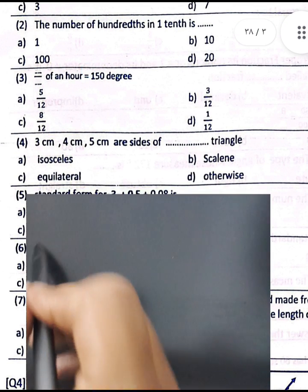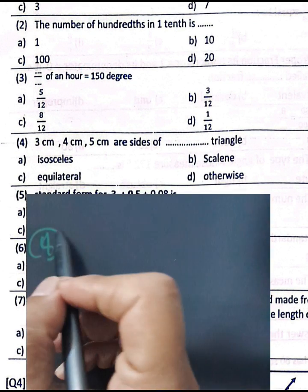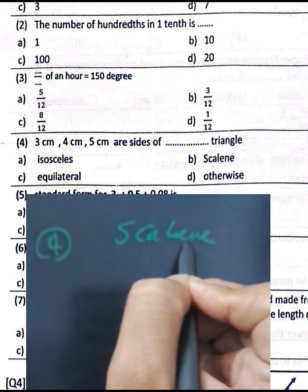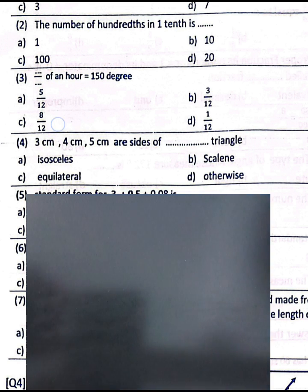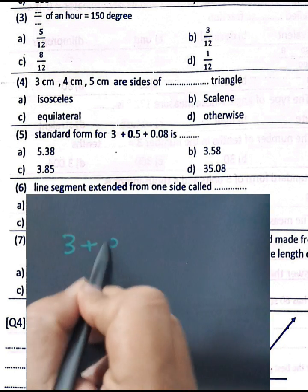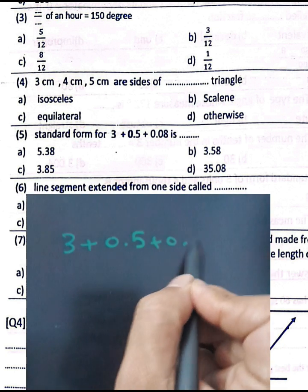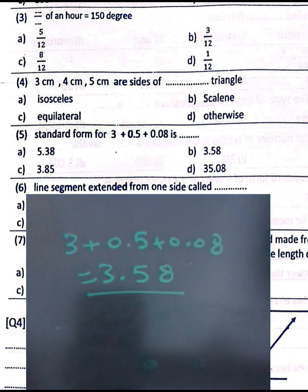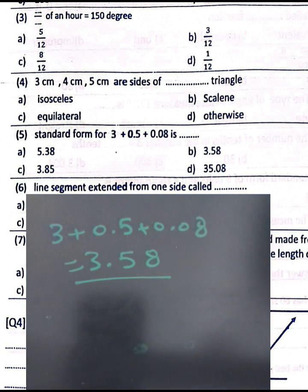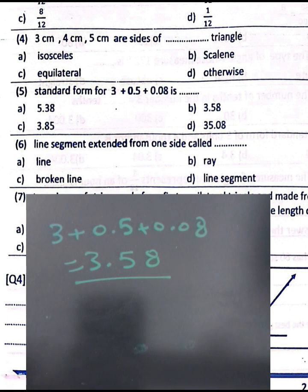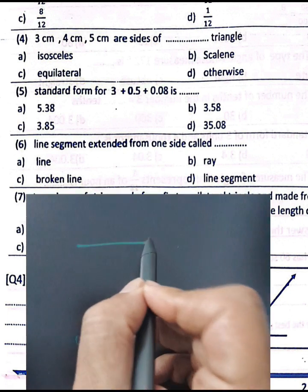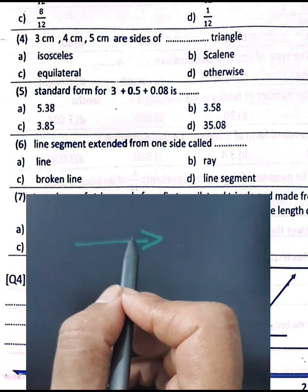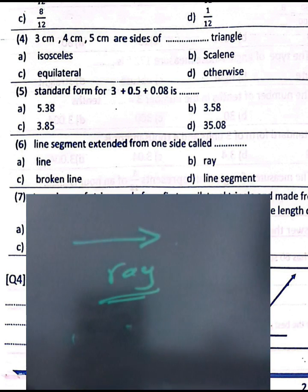Question number four: a triangle with sides 3 cm, 4 cm, and 5 cm — all sides are different, so we call it a scalene triangle. Question number five standard form: 3 plus 0.5 plus 0.08. We write three and five tenths and eight hundredths, so the result is 3.58.